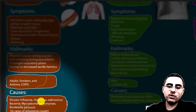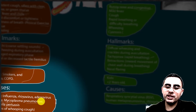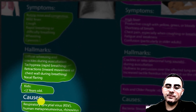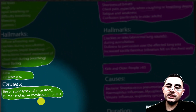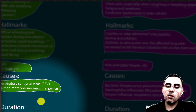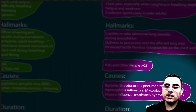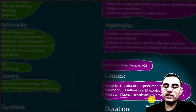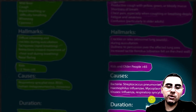Bronchiolitis causes include respiratory syncytial virus (RSV), human metapneumovirus, and rhinovirus. In the case of pneumonia, causes can be bacterial — Streptococcus pneumoniae (the most common), Haemophilus influenzae, Mycoplasma pneumoniae — and viral, including influenza virus, RSV, and COVID-19.